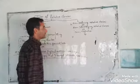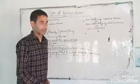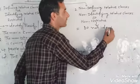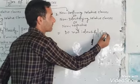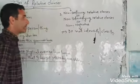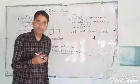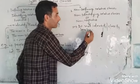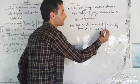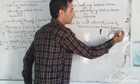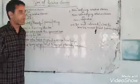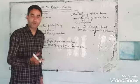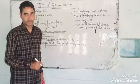Non-defining relative clauses do not identify or classify. They simply tell us more about a person or thing — they give us extra information about a person or thing.